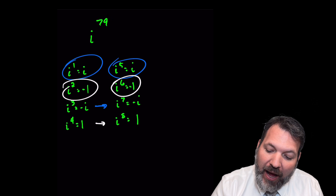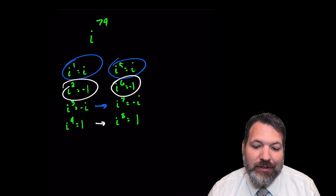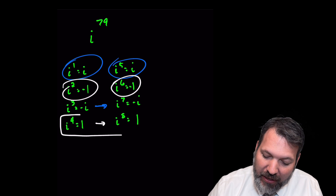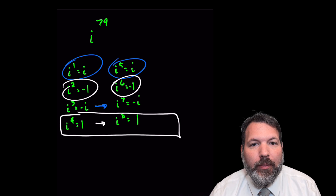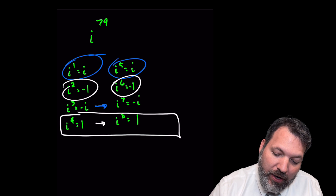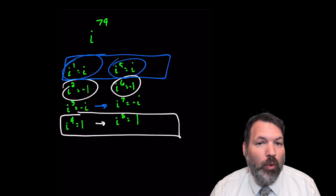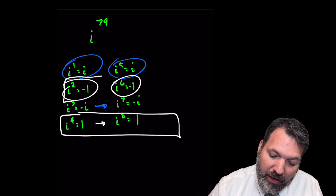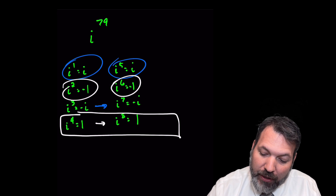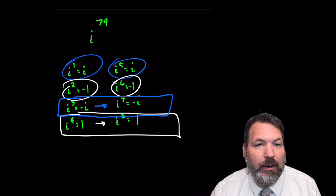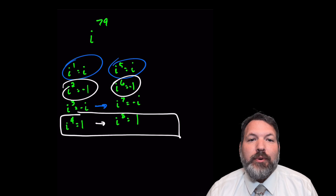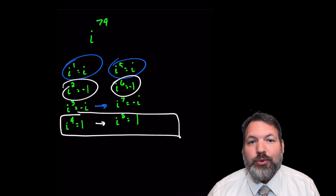When I want to compute something like i to the 79th, I only need to figure out where it fits in this cycle. The cycle begins at 1 every time when my exponent is a multiple of 4. Every exponent greater than a multiple of 4 by 1 equals i, by 2 equals negative 1, and by 3 equals negative i. And again, every multiple-of-4 power is equal to 1.